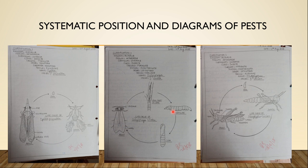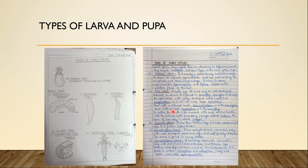For larvae and pupae, you can draw different types of larvae on the diagram side and write the description of the different kinds of larvae on the right side. For pupae also, you have to make diagrams of the different types of pupal stages on the left side and write the description on the right side.